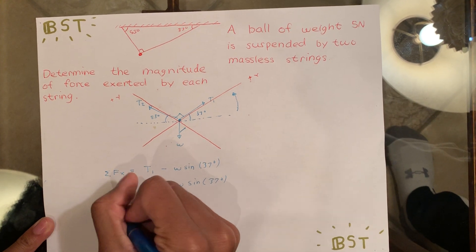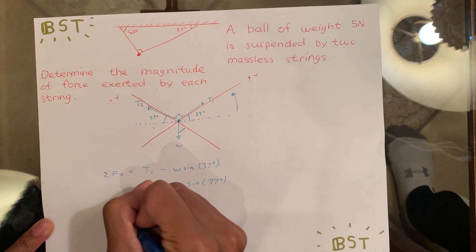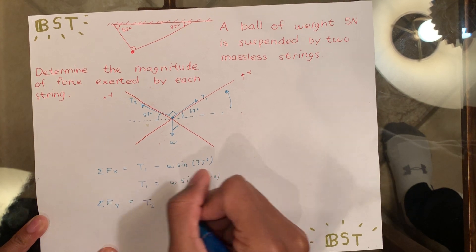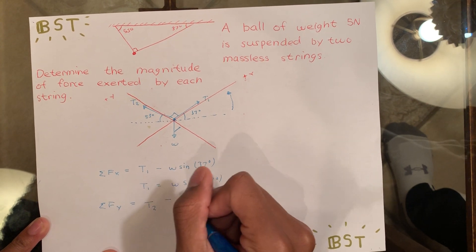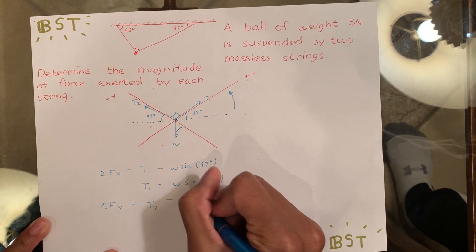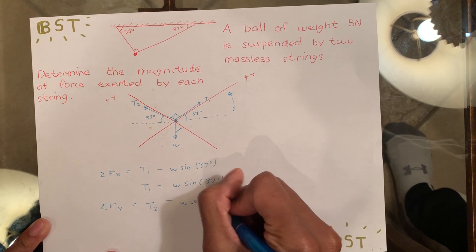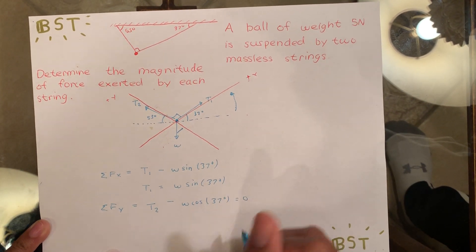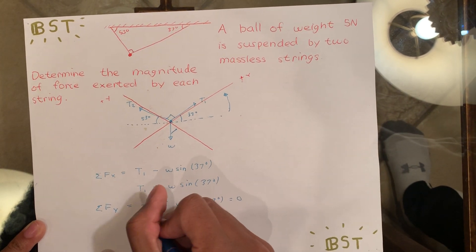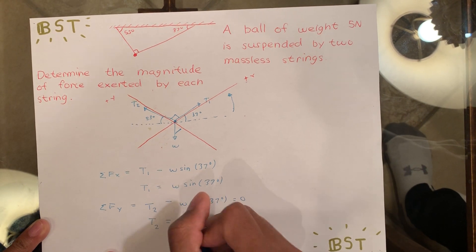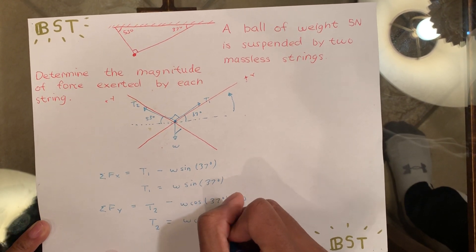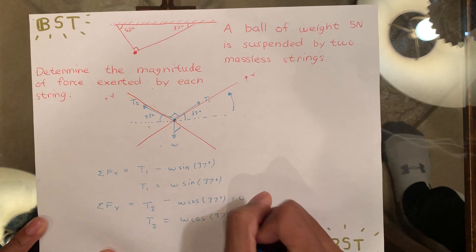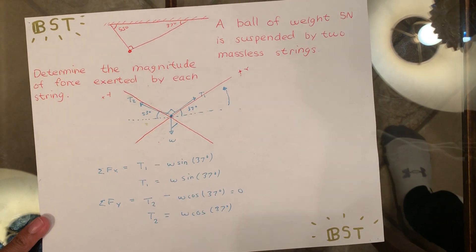Now in the y-direction, we have tension 2 minus our weight times the cosine of 37 degrees, and it's equal to 0. And tension 2 is equal to weight times the cosine of 37 degrees. I'll see you next time.